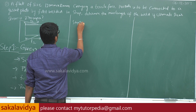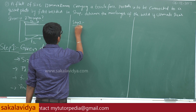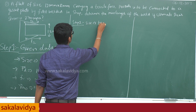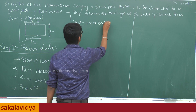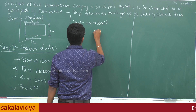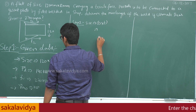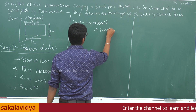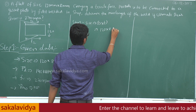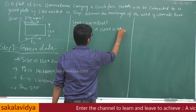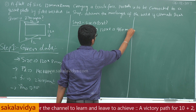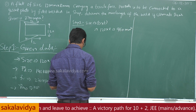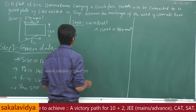Step 1: Size of the plate. Size of the plate is equal to B into T, that is 120 x 8, which equals 960 mm square.